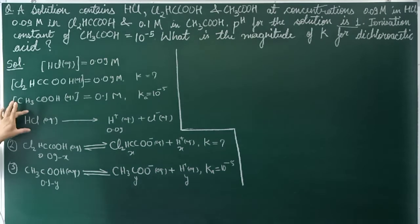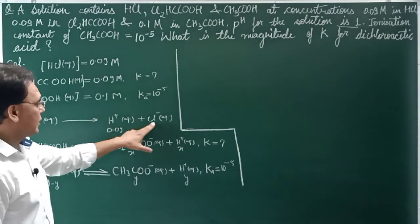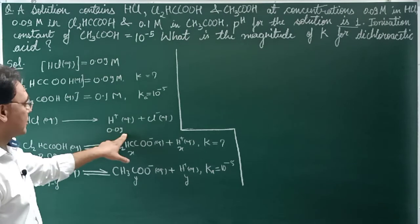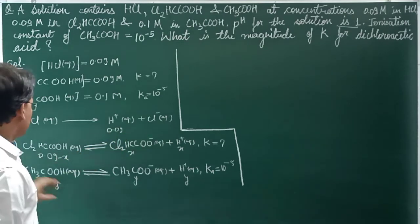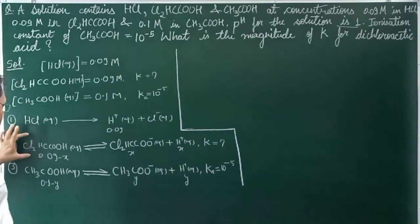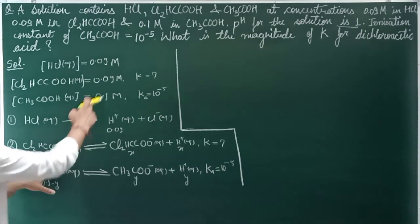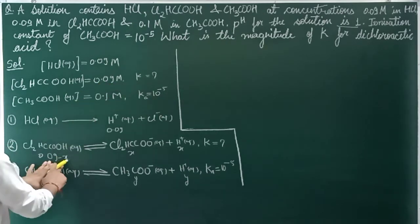HCl is a strong electrolyte and is 100% ionized, so it contributes 0.09 M to the H⁺ concentration directly. The ionization contribution from HCl is 0.09 M.